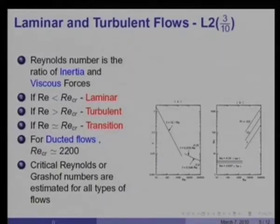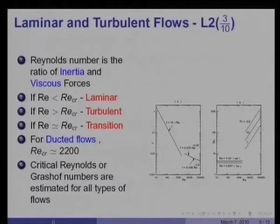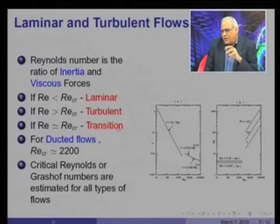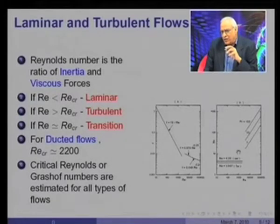Laminar, turbulent, and transitional flows are all important classifications from the point of view of convective heat transfer. In fact, many equipments are deliberately run in the transitional Reynolds number range simply because it is in this range that there is a very sudden increase in heat transfer rate.